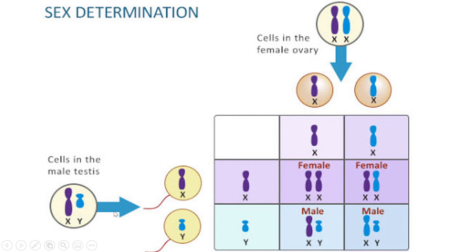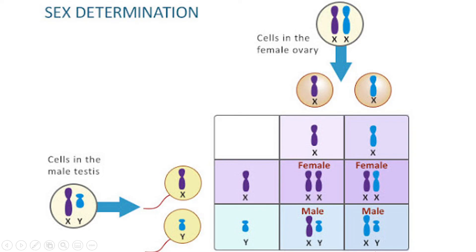This is important for sex-linked traits. A simple Punnett square shows us that when male gametes and female gametes fuse, there will always be a 50% chance of getting a female and a 50% chance of getting a male. In real life, for humans or any organism, there will always be a 50% chance with every mating to get a male and a 50% chance of getting a female.